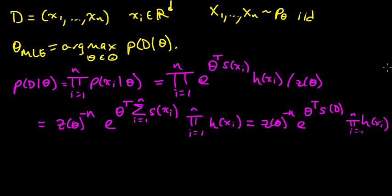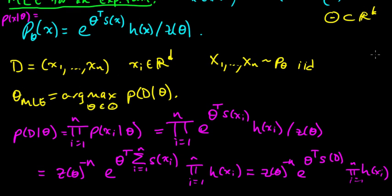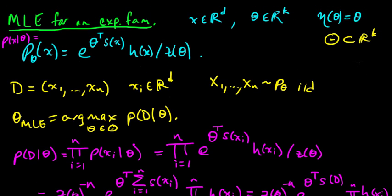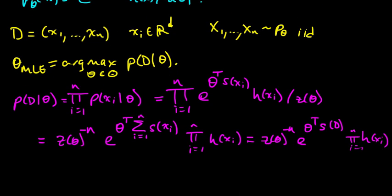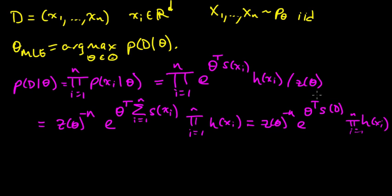So now we want to maximize this with respect to theta. Now theta, remember, is a vector in R^k. So we need to maximize with respect to this vector. So let's do the standard calculus thing. We'll set the gradient equal to zero and solve.